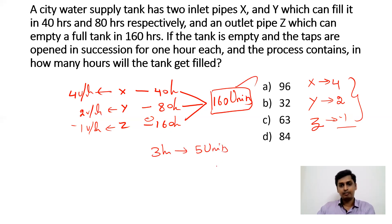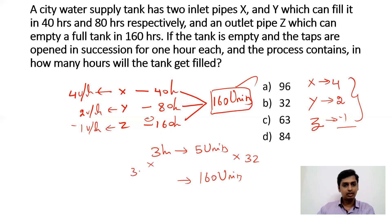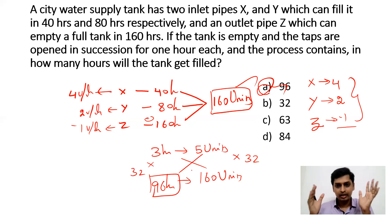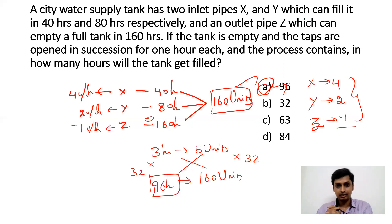The total capacity of the tank is 160 units. Since 5 units are filled in 3 hours, and 5 × 32 = 160, the time taken is 3 × 32 = 96 hours. So all 3 pipes working in succession will fill the 160-unit tank in 96 hours. This is our answer.